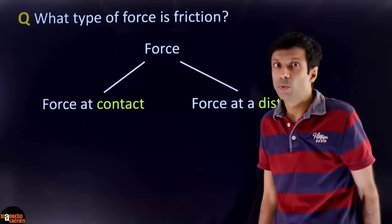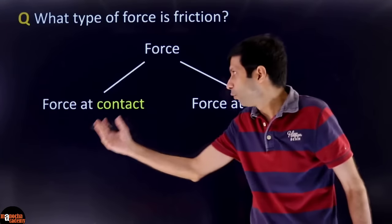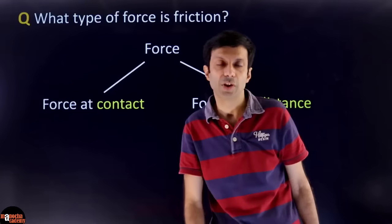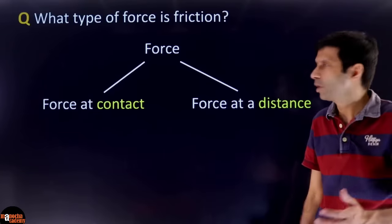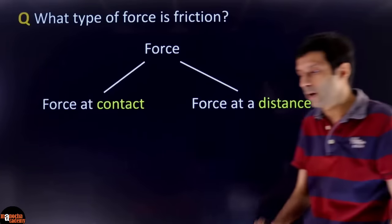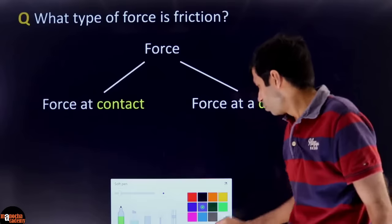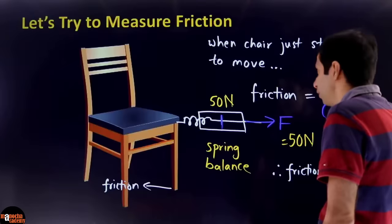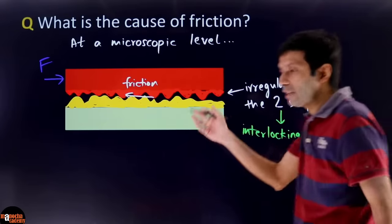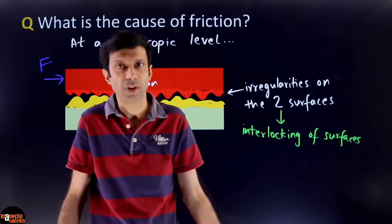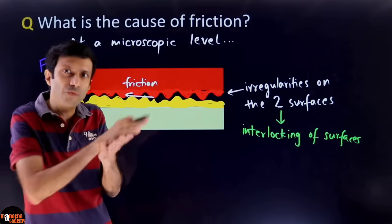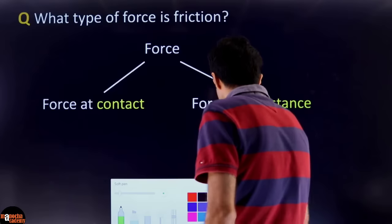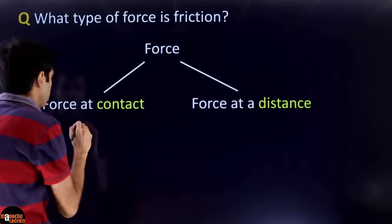Remember there are two types of forces: contact force and non-contact force, also called force at a distance. Which one is friction? Clearly, friction requires contact — the two surfaces have to be in physical contact with each other for there to be friction. So friction is a contact force. Contact is a must.